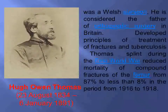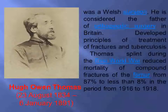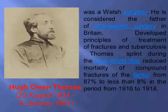Another surgeon from Wales, Hugh Owen Thomas, is remembered most for his splint — the Thomas splint — which we have used for more than 100 years. We use it to immobilize fractures of the hip joint and femur. His splint was originally developed to treat tuberculosis of the knee joint, but during World War I it was used in large numbers to save patients' limbs. When lower extremity fractures were immobilized with this splint, mortality was significantly decreased.